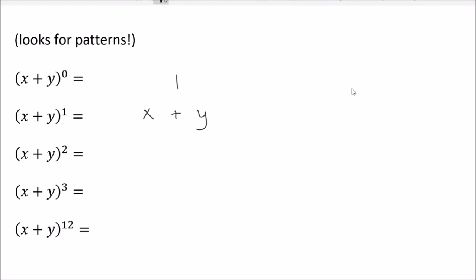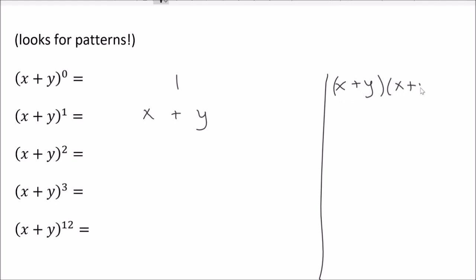What about x plus y to the first power? The first power doesn't do anything, so that would just be x plus y. I'm going to space these intentionally — you'll see why by the time I'm done. What about x plus y squared? Time for a little side work. That would be the same as x plus y times x plus y.